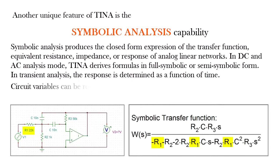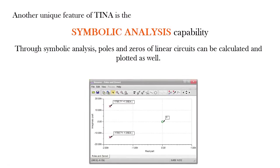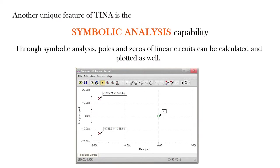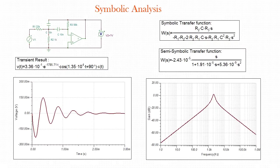Circuit variables can be referenced either as symbolic names or by value. Through symbolic analysis, poles and zeros of linear circuits can be calculated and plotted as well. For example, let's see the symbolic and numerical analysis results of an active bandpass filter.